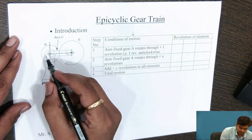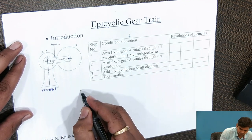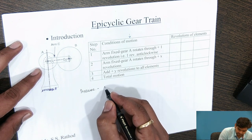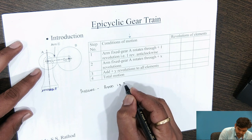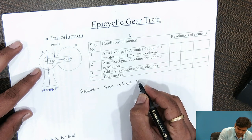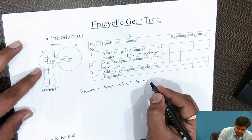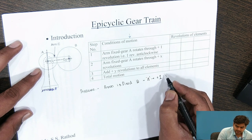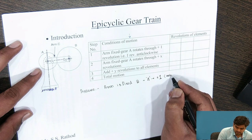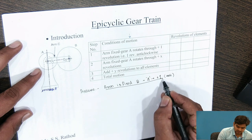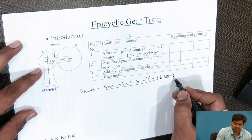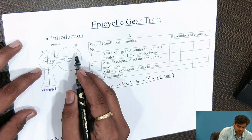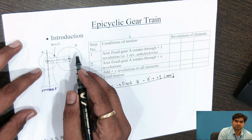First, in this diagram, suppose we assume that the arm is fixed and gear A rotates through one revolution. You have to consider the anticlockwise direction as plus. This is the first condition: arm is fixed, gear A makes plus one rotation in anticlockwise direction. Under this consideration, as the arm is fixed, if gear A makes one rotation, we can easily find out the rotation of gear B by using the simple gear train.